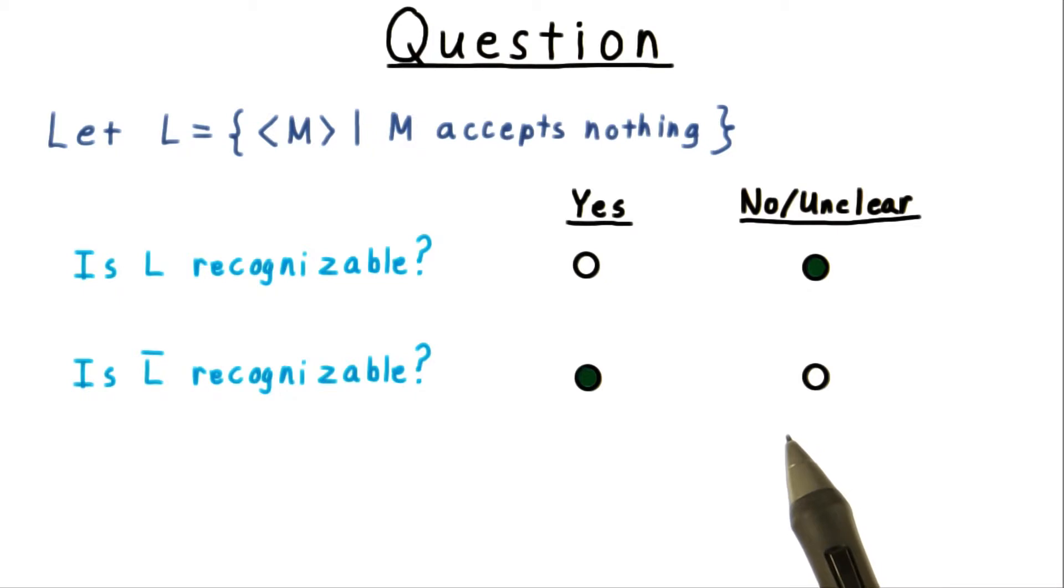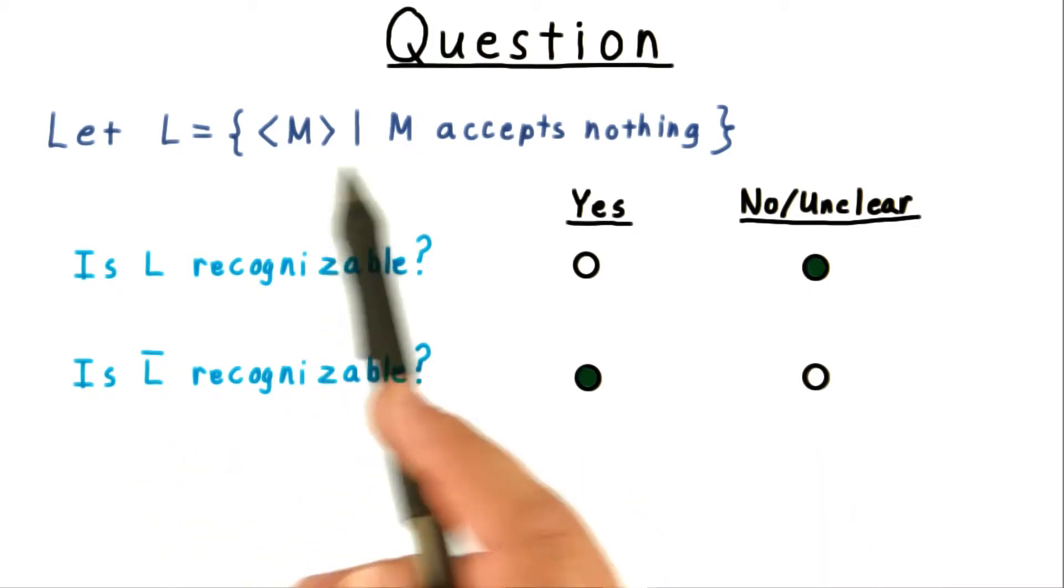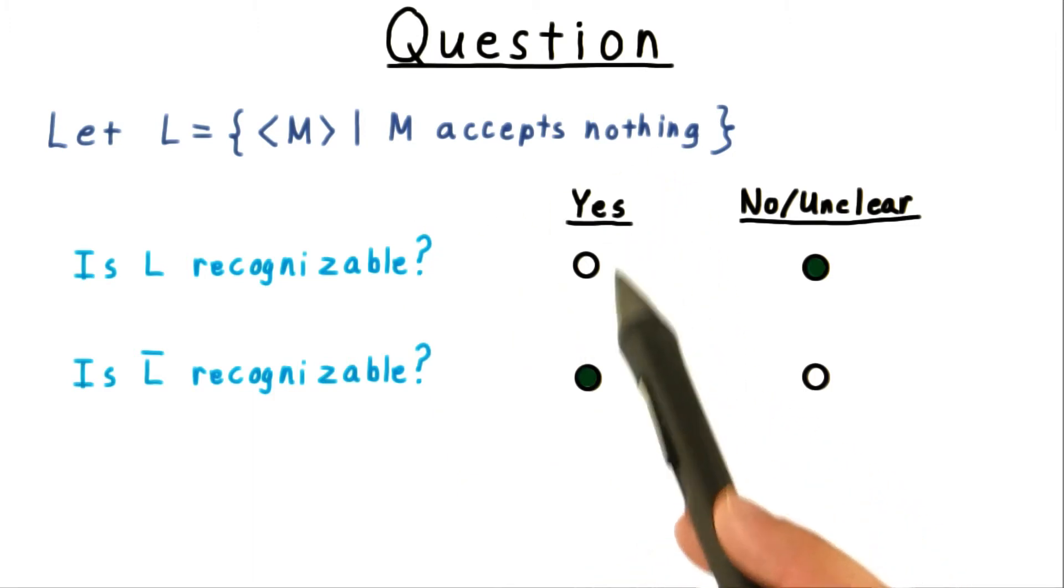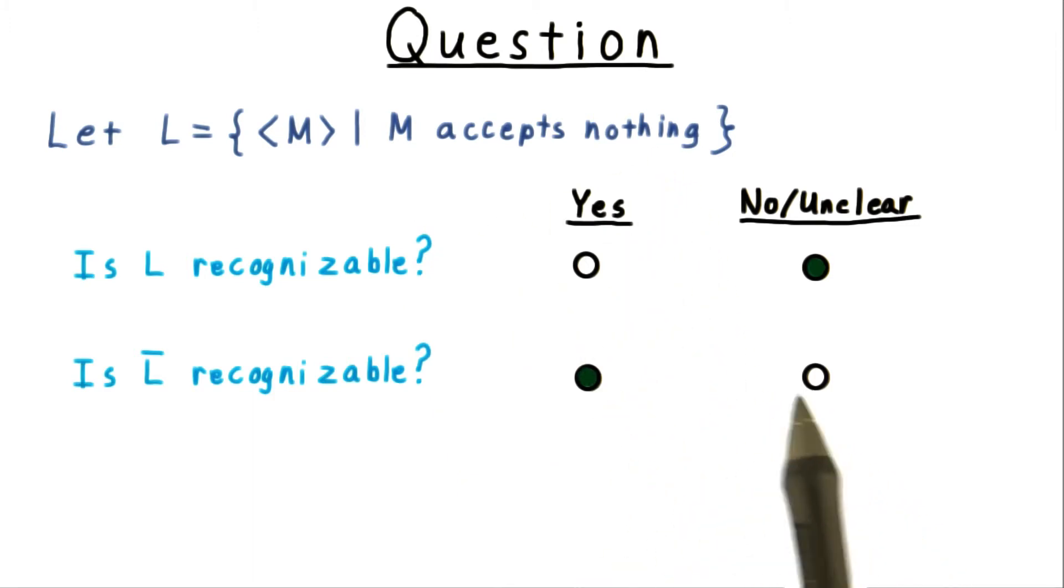But it's not clear that we can do that in general. On the other hand, it turns out that we can recognize L complement, the set of Turing machines that accept something. We just run the Turing machine on all strings and see if it accepts any of them.